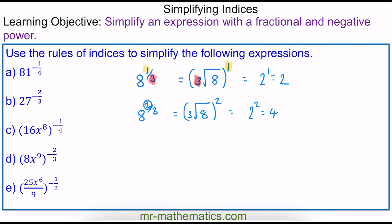And finally, if we have 8 to the power of negative two thirds — the negative power means it is the reciprocal, or 1 over 8 to the two thirds. So we have 1 over 8 to the two thirds, which we know is 4. So this becomes 1 quarter.